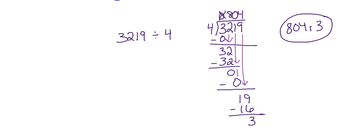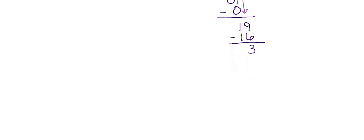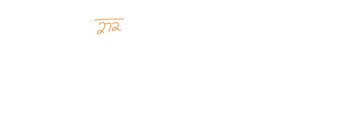Let's try another problem — this will be our last one. We have 272 divided by 4. We ask ourselves: how many times can four go into two? It can't, so I'm going to leave it blank. We still put a zero here for the subtraction: two minus zero is two. Then we go ahead and bring down the seven.